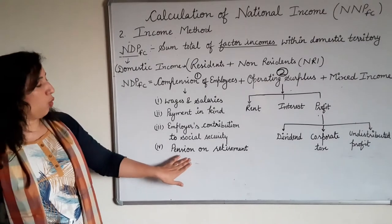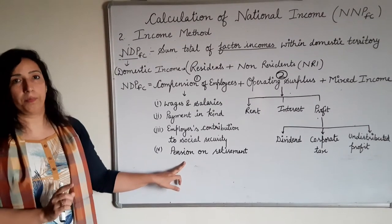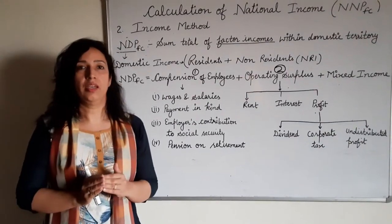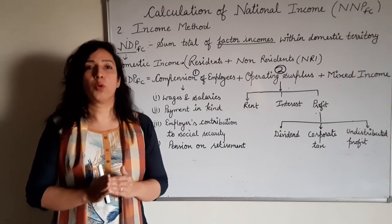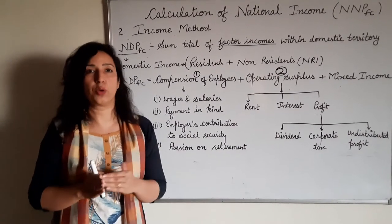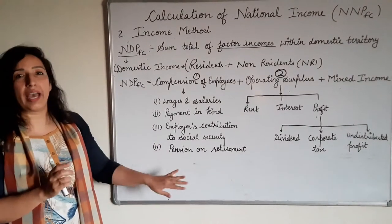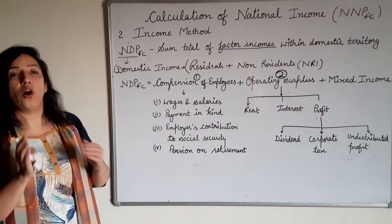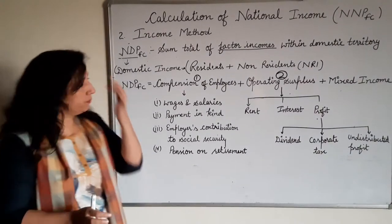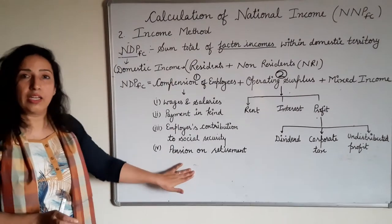Important clarification: old age pension will NOT be included here, because old age pension is not earned income — it is a transfer income, just like charity, donation, and scholarship. Pension on retirement is included, but old age pension is not. Please make this clear. Compensation of employees includes four sub-heads.